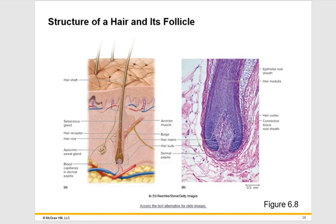Looking at a drawing and an actual microscope image, we can identify some of these different structures. In the real microscope image, the very center is known as the medulla, then we have the cortex, and the very outer edge of the hair sits wrapped in the hair follicle. The bulb and the matrix are the area of the hair where mitotically active cells that can regenerate are found.